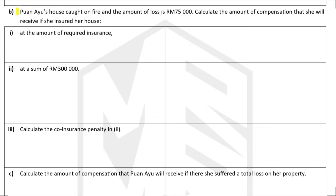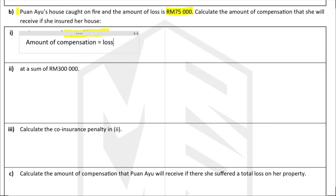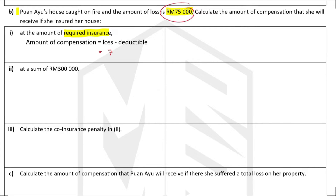Puan Iu's house caught on fire and the amount of loss is 75,000 ringgit. In scenario one, if she insured the house at the required amount of 375,000 ringgit, then the compensation is simply the loss minus the deductible: 75,000 minus 3,500 ringgit, which equals 71,500 ringgit — provided the loss is less than the insured amount.